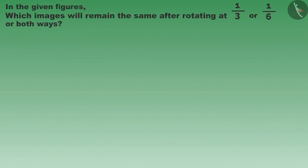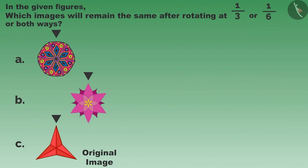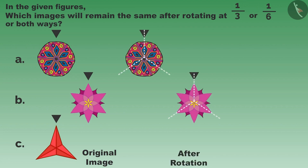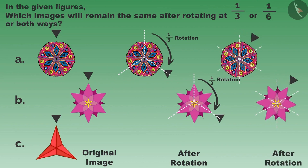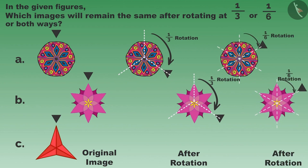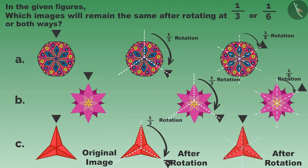Children, look at these images and find out which images will remain the same after one-third or one-sixth rotation or both. As you can see, figures A and B are not changing after one-third rotation and one-sixth rotation. And figure C does not change after one-third rotation. After one-sixth rotation, it will change and look like this.